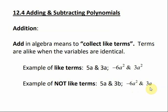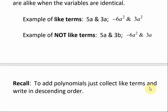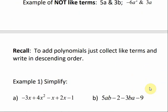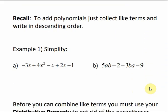Negative 6a squared and 3a are also not like terms. Even though they both have a's for their variables, the negative 6a squared has a square on the variable and 3a does not. So they have to be the same variable with the same exponent in order to be like terms. To add polynomials, we collect like terms and write in descending order — from biggest to smallest according to the exponents.